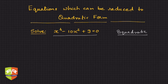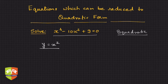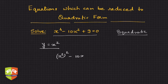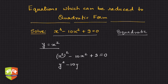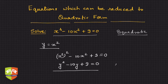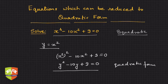So let us assume y to be equal to x squared. Hence, this equation can be reduced to quadratic form. We can write x to the power 4 as x squared squared, so the equation becomes x squared squared minus 10x squared plus 9 equals 0. Now simply put y in place of x squared, giving us y squared minus 10y plus 9 equals 0.